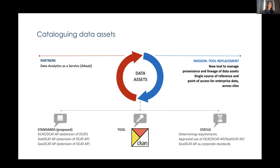Our last use case covers data assets. We're currently working on a proof of concept to use CKAN — an open source data management system for powering data hubs and data portals. CKAN will be used to replace existing tools and will manage the provenance and lineage of data assets, act as a single source of reference, and provide a point of access for enterprise data across different silos in the agency. The proposed standards are DCAT, DCAT-AP, STAT-DCAT-AP, and GEO-DCAT-AP. We received approval about a year ago to use these as corporate standards. This use case ties greatly into the search and discovery items discussed at the start of the presentation.